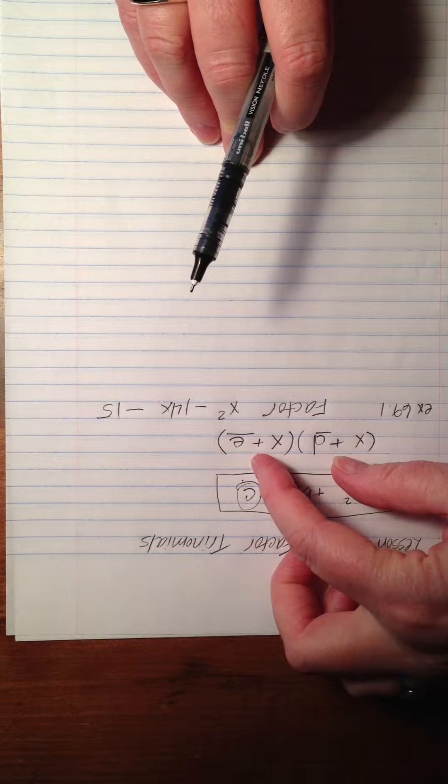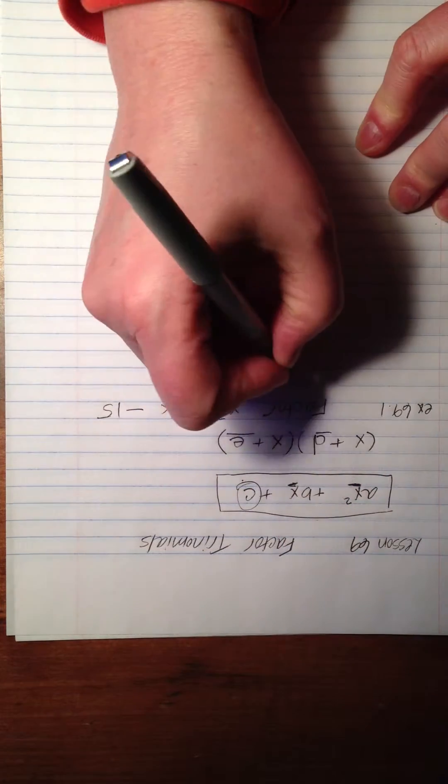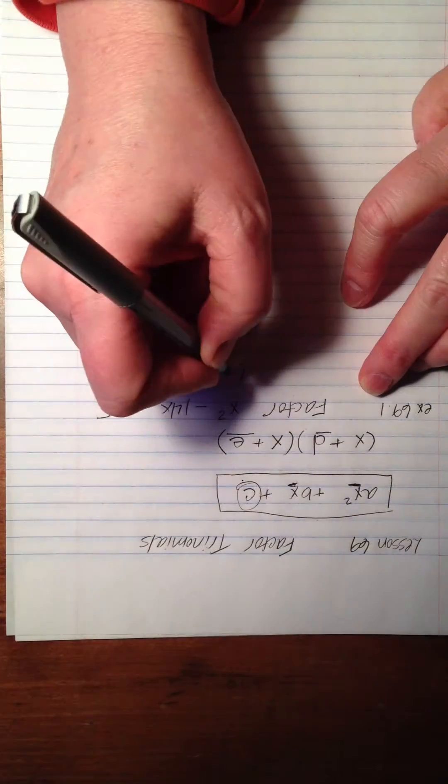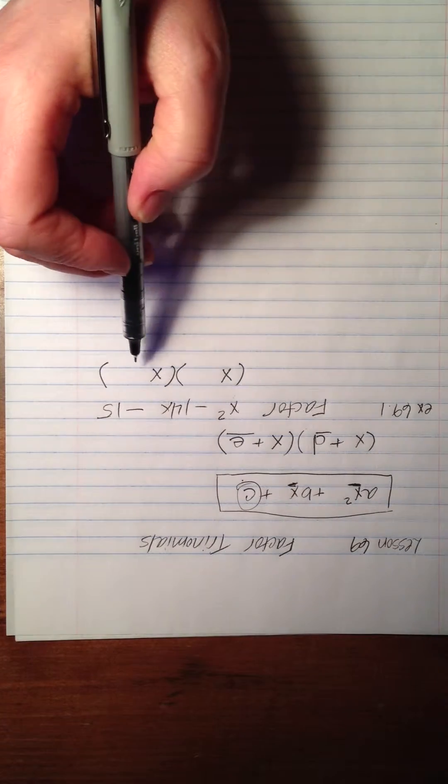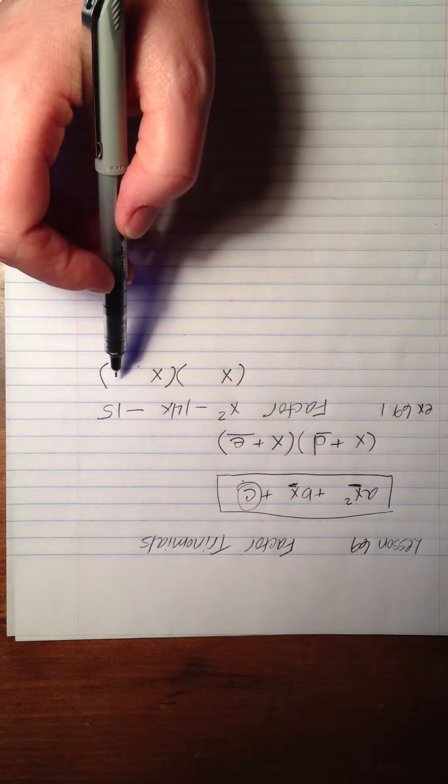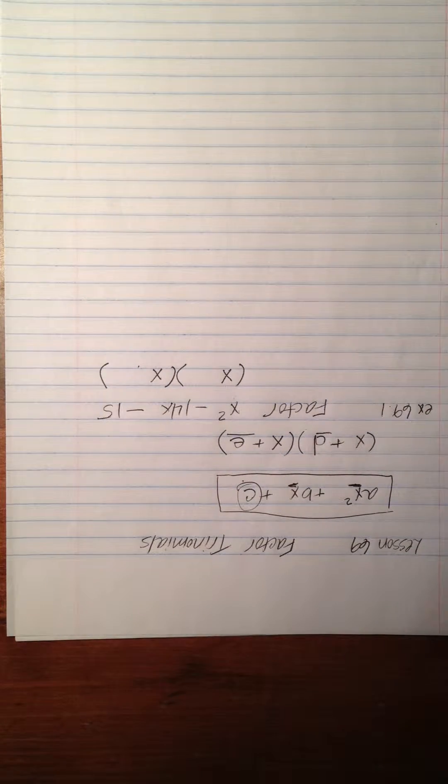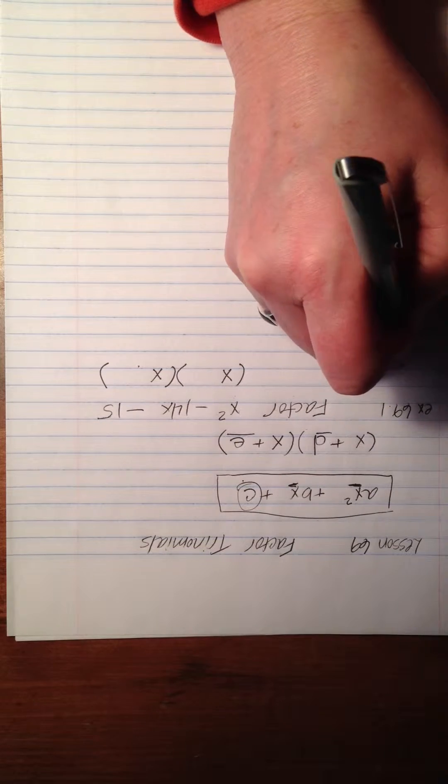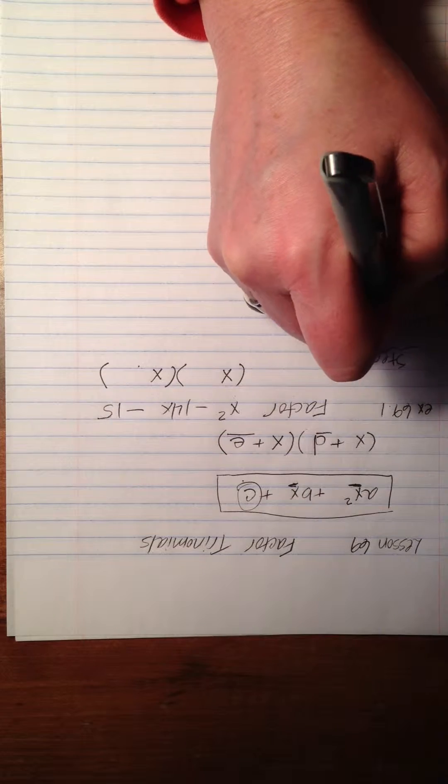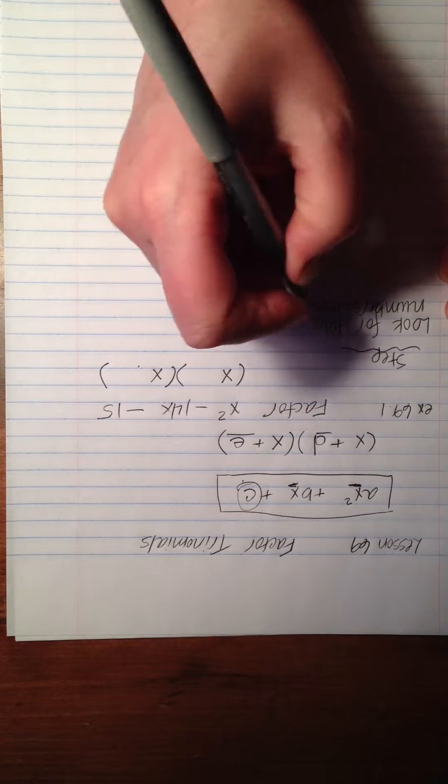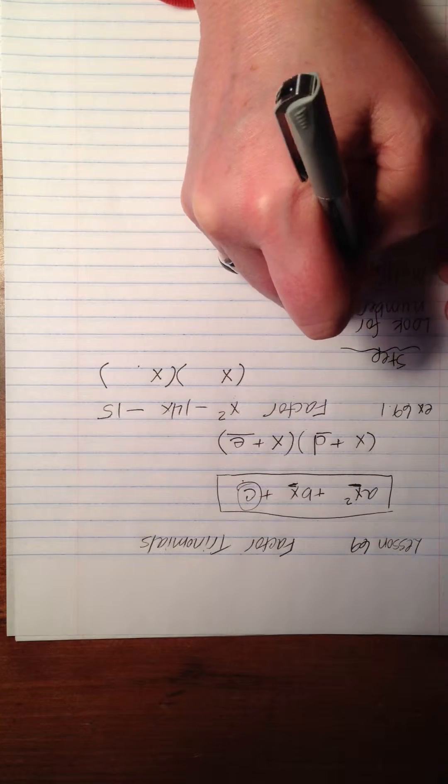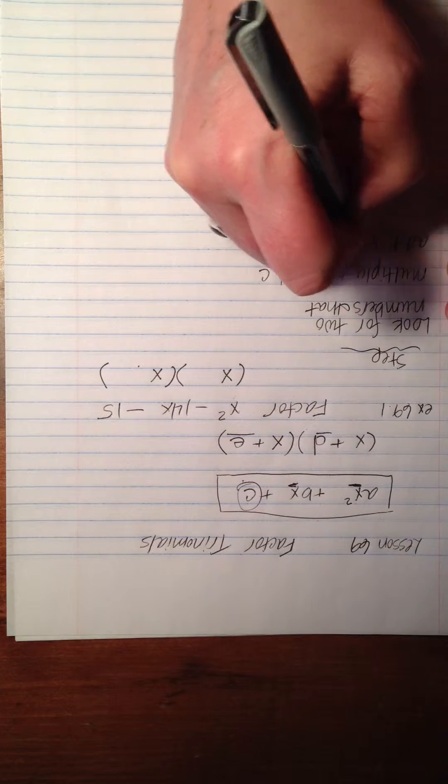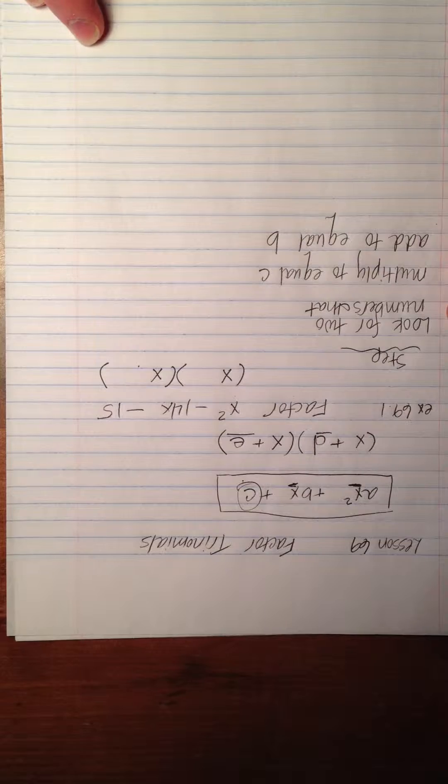What we know is that there are a pair of binomials that we can use to multiply that would give us that answer, and we have to figure out what they are. We know it's going to look like this: we know there are going to be x's at the beginning of each of those binomials, and we know there's going to be either a plus or a minus sign, and then we know there's going to be numbers at the end. The question is, what numbers and what signs? Here's the way that we figure it out.